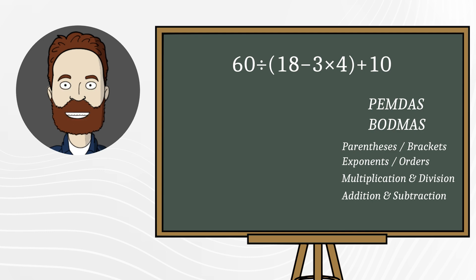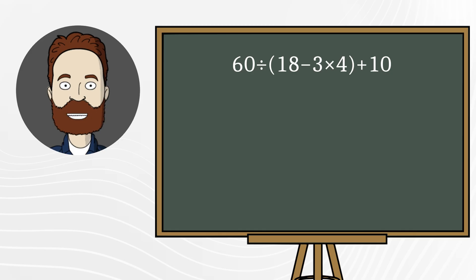Let's go back to our expression. We start with the parentheses, but first we perform the multiplication. 3 times 4, we get 12. Subtract, 18 minus 12 equals 6.